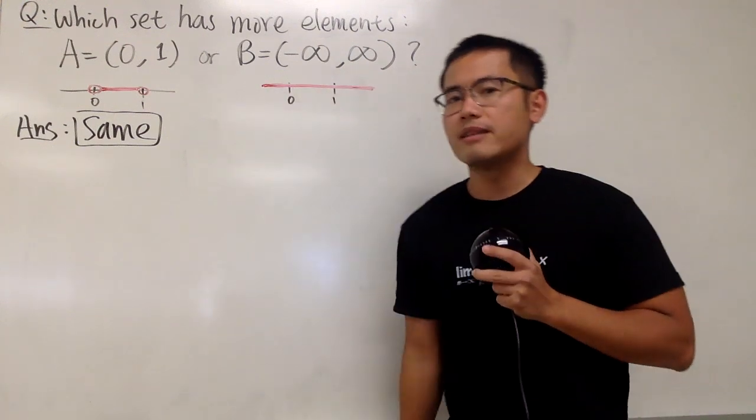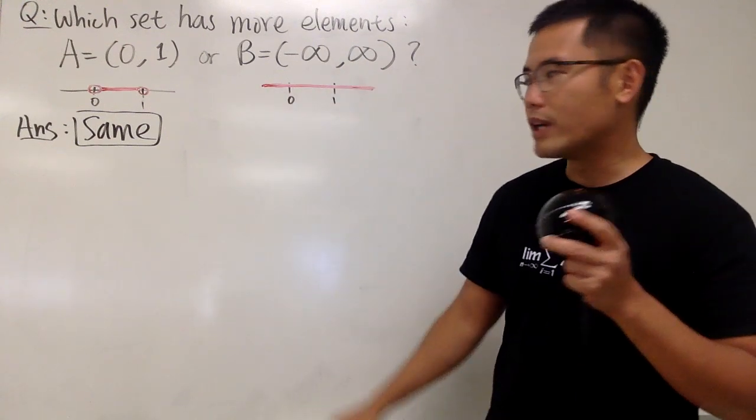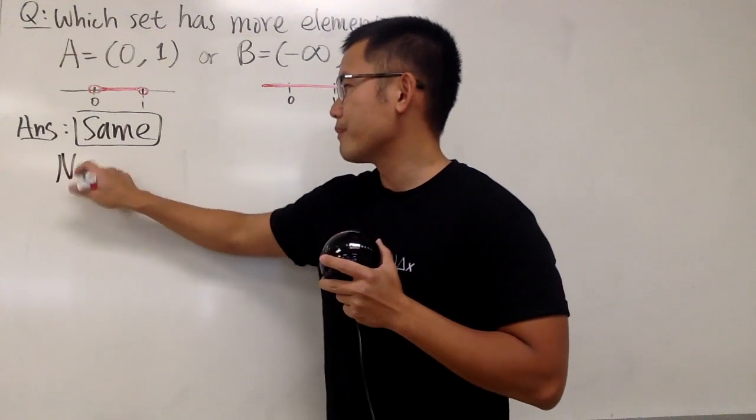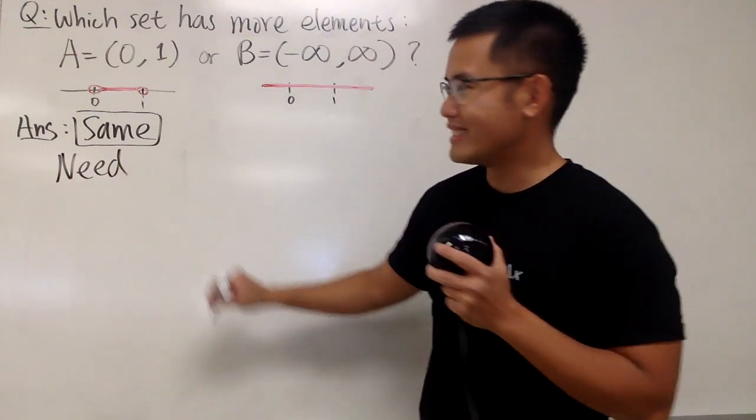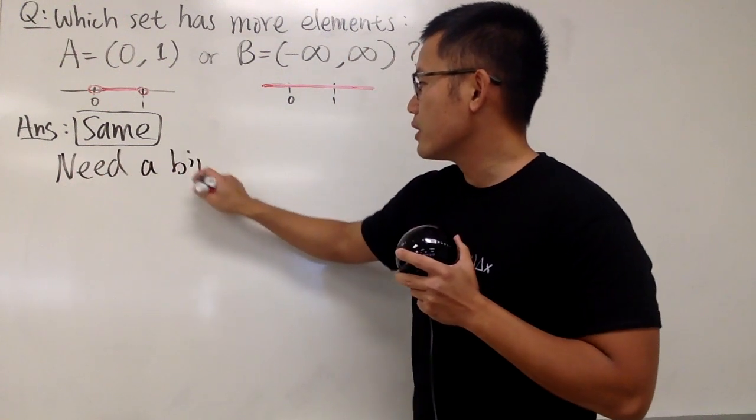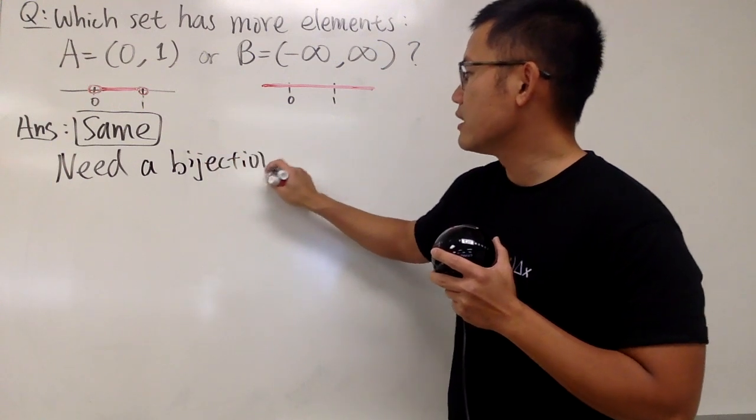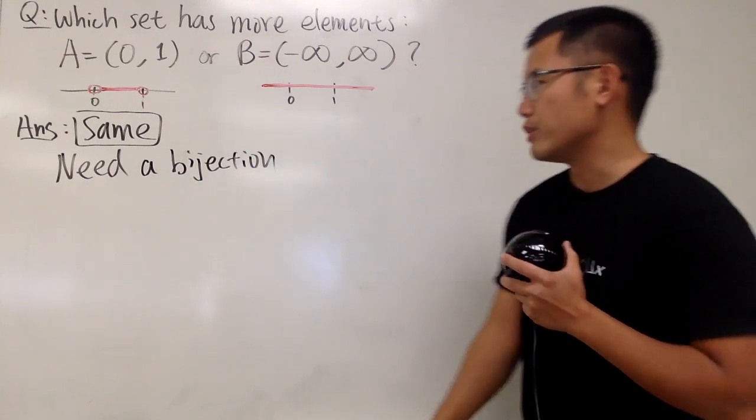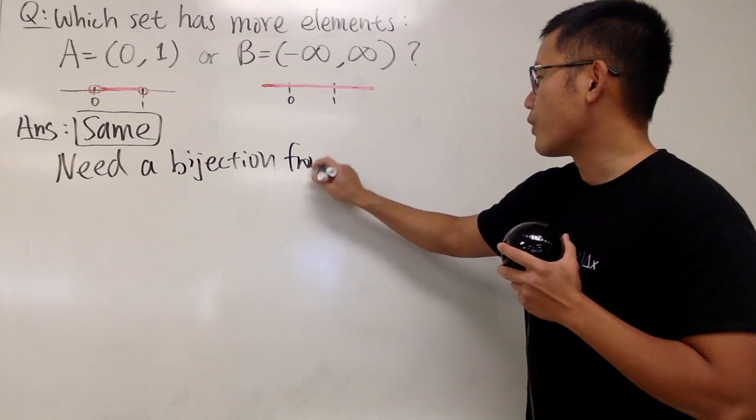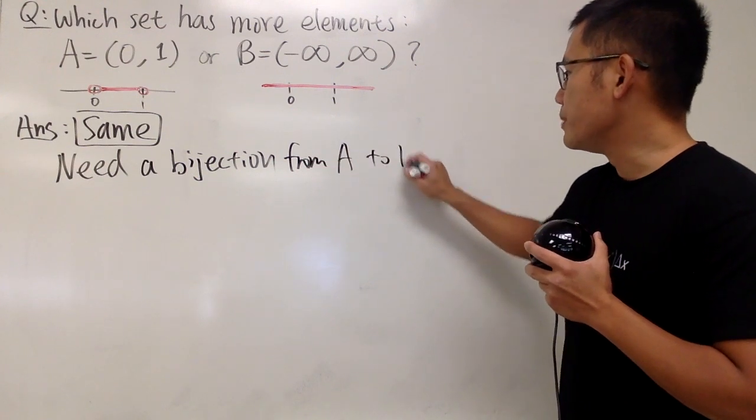To show that two sets have the same number of elements, what do we need? Yes, we need a bijection going from one set to the other, and it doesn't really matter which order that you do it, but let me just say let's go from A to B, right? Why not?